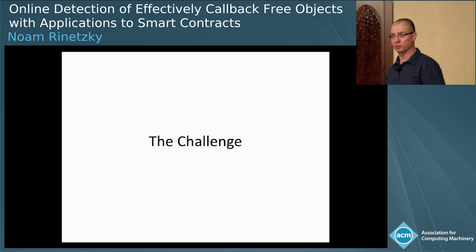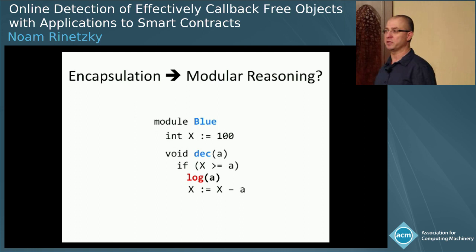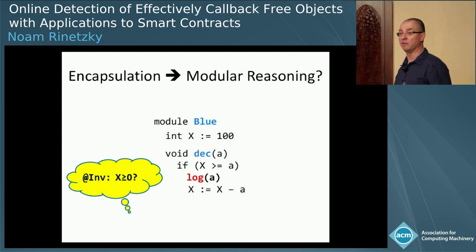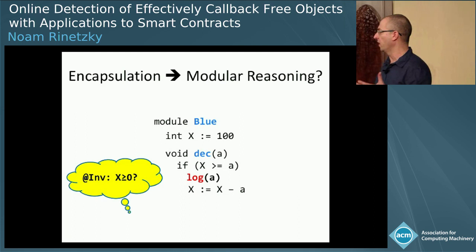So what is the challenge? We have a very strong notion of encapsulation — every component has its own state, and only its methods can manipulate that state. Consider a simple example: a blue module with a single variable X initialized to 100 and a method called decrement, which gets a value A, checks if A is smaller or equal to X, logs that it's going to decrement A, and then does the decrementation.